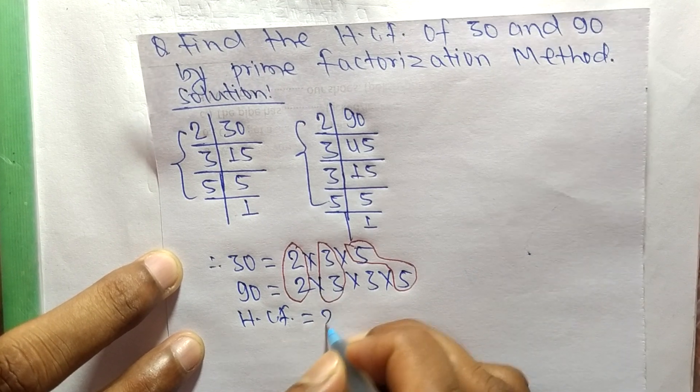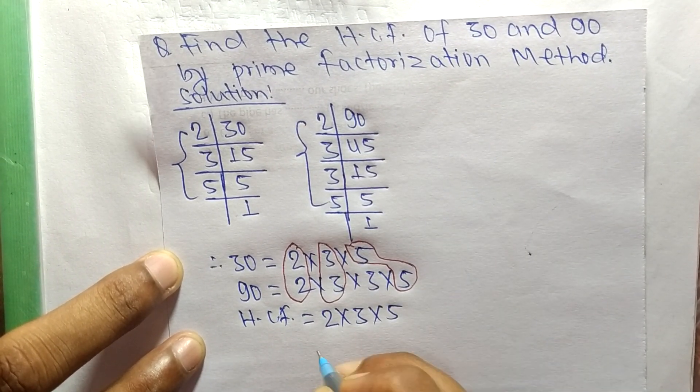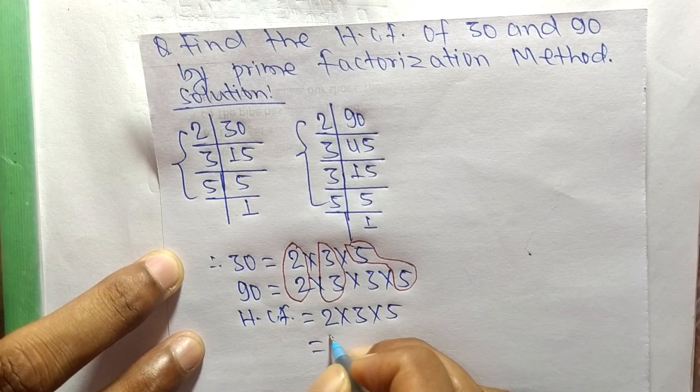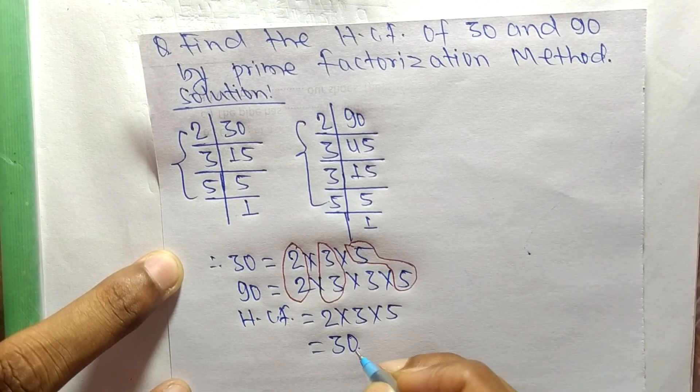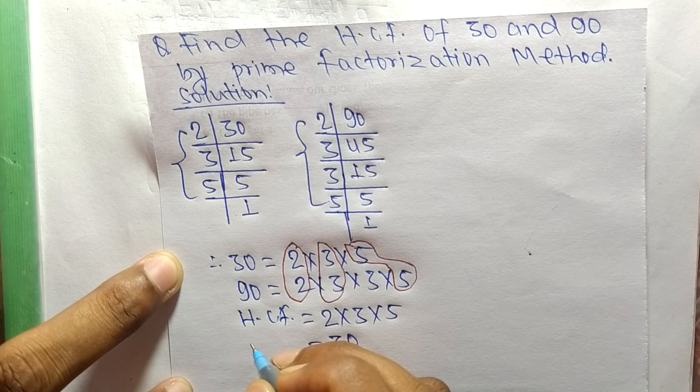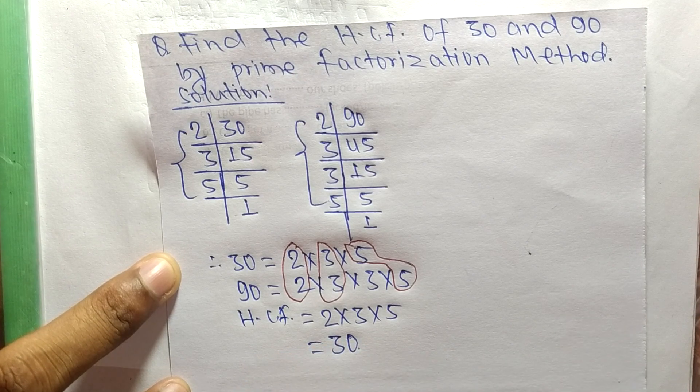2 times 3 equals 6, and 6 times 5 equals 30. So 30 is the HCF of 30 and 90. That's all for today, and thanks for watching.